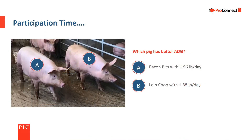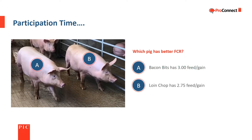Which pig has a better average daily gain? Bacon Bits with 1.96 pounds per day, or Loin Chop with 1.88 pounds per day? Remember that with average daily gain, a higher number is better. So the answer is A, Bacon Bits with 1.96 pounds per day. Which pig has a better feed conversion ratio — Bacon Bits or Loin Chop? Since a lower feed conversion ratio is better, the correct answer is B, Loin Chop, who is more efficient at converting feed to gain than Bacon Bits.